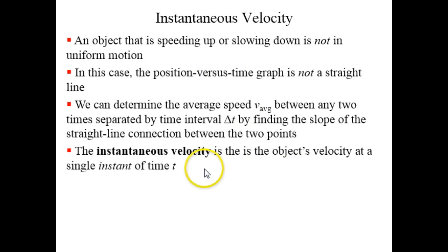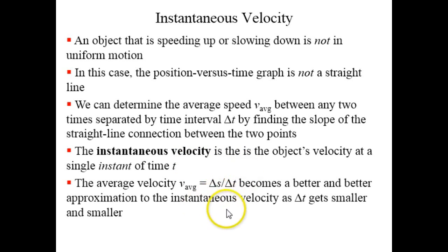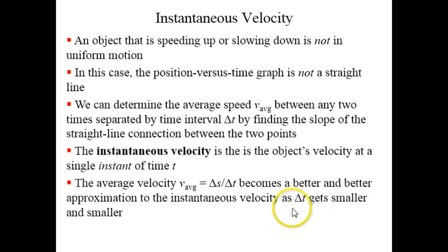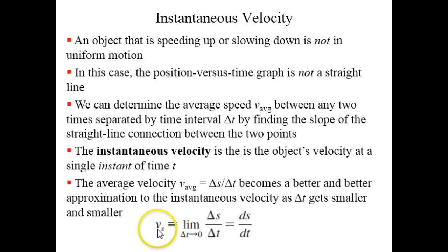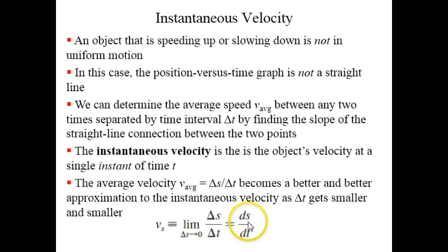If we want to know the instantaneous velocity, we take the average velocity and take a limit as delta t gets smaller and smaller. So v sub s instantaneous is the limit as delta t approaches zero of delta s divided by delta t, and that's called ds by dt. Instead of delta triangles, you use lowercase d.